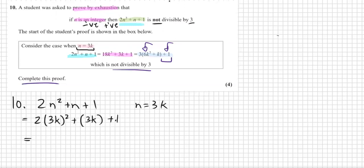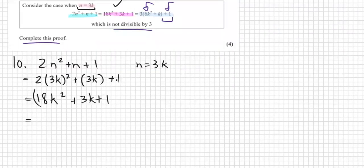Then timesing that out, 2 times 3 squared is 9, 9 times 2 is 18k². So 18k² + 6k + 2. Then the last part, if you group it and take out 3 as a common factor from these two, you get 3(6k² + 2k) + 2. So it's not divisible by 3. That was all given, not part of our answer.